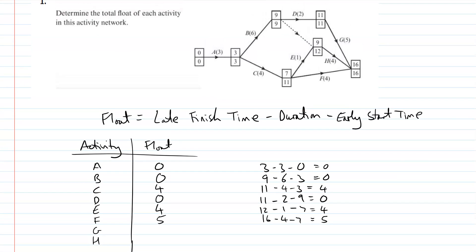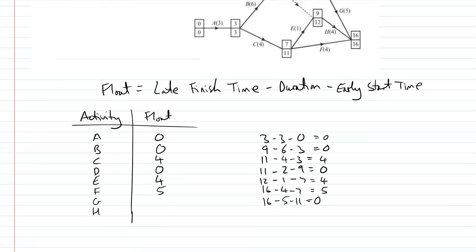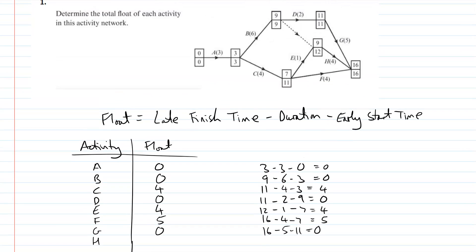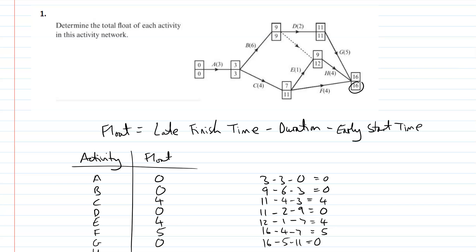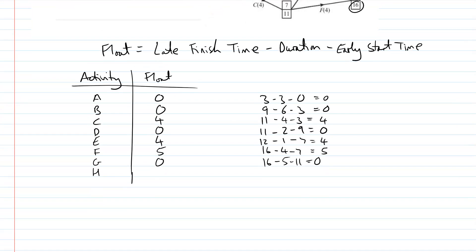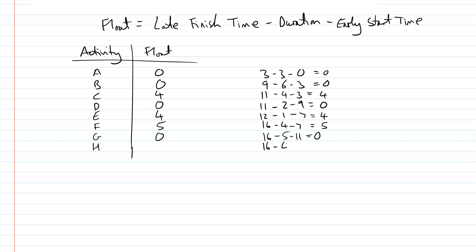G has got, it's critical, isn't it? 16 minus five minus 11. Late minus this minus this. And then H, 16 minus four minus nine, which is three. So H has three as its float time.